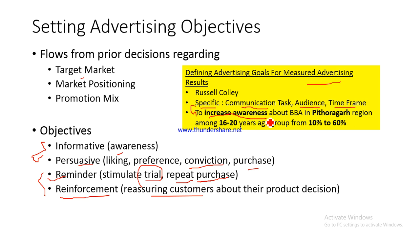The communication task is: to increase awareness about BBA in the Pythodagra region. The area has been specified, the age group has been specified, and what we are trying to achieve has been specified - we are trying to increase the awareness level from the current 10% to 60%. That is being very, very specific. This particular advertising campaign wants to increase awareness from 10% to 60%, targeting the 16 to 20 year age group in the Pythodagra region.